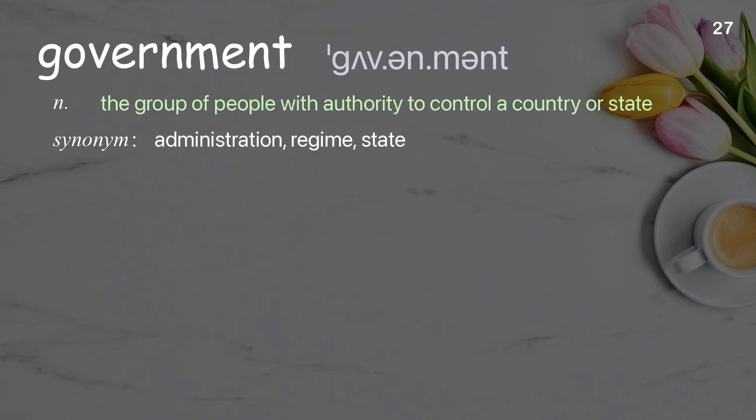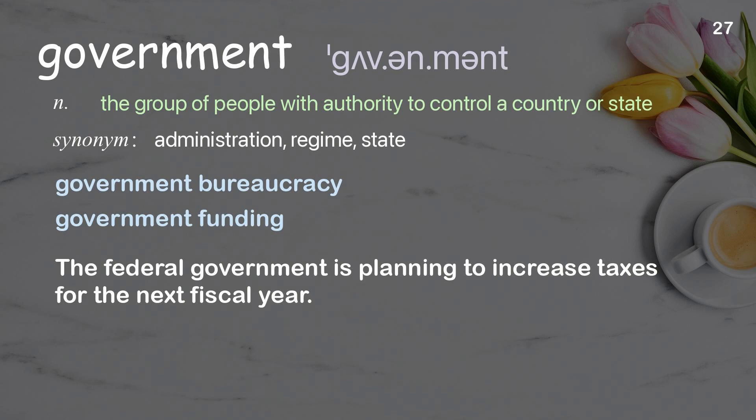Government: The group of people with authority to control a country or state. Examples: Government bureaucracy. Government funding. The federal government is planning to increase taxes for the next fiscal year.